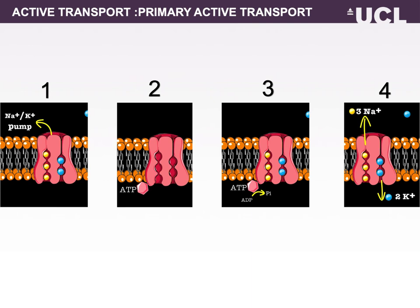Primary active transport, also called direct active transport or uniport, involves using energy — usually ATP — to directly pump a solute across a membrane against its electrochemical gradient. The most studied example is the plasma membrane sodium-potassium ATPase, arguably the most important active transport protein in the plasma membrane. This single enzyme accounts for one third of human energy expenditure and is often referred to as the pacemaker for metabolism. The mechanism is based on toggling between two conformational states of the enzyme.